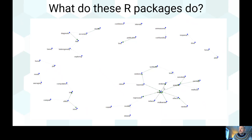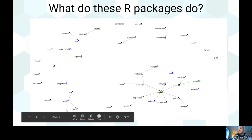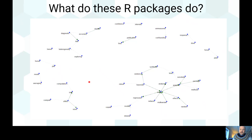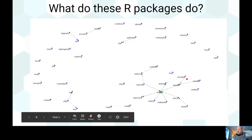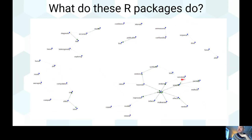11 percent of these packages are to do with effect sizes — converting effect sizes. Quite a few — about seven percent — are to do with sensitivity analysis. Seven percent are to do with plotting functions, mostly forest plots but some other templates. And six percent relate to network meta-analysis, which is coming through quite high.